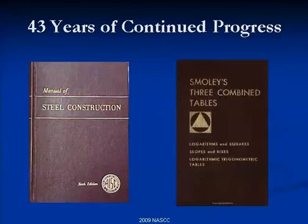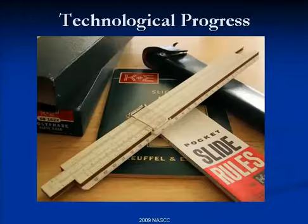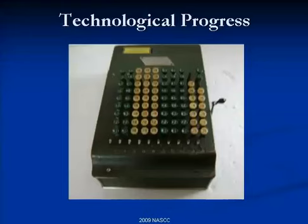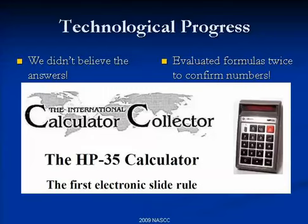I've been in the business 43 years, and Ted was one of my first bosses — very young at the time. We started with the 6th edition, which cost $7; the company gave them to us. Nowadays you might pay $350, or $175 as a member. We had Smollies, Log Tables, and Slide Rules for calculations. We never trusted the results — we did the numbers twice and sometimes struggled with the decimal point. We had Comptometers for adding up dead load accumulations. Eventually we were issued HP35s, the electronic slide rule.